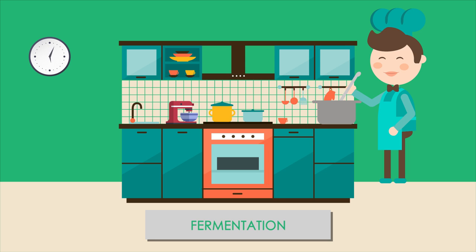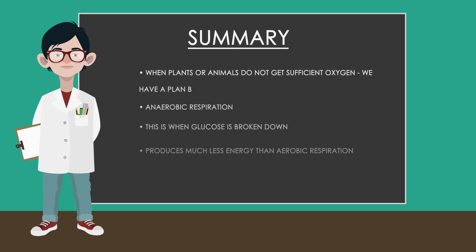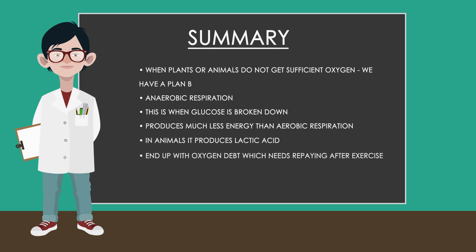In bread making, it is the carbon dioxide that is useful — the bubbles of carbon dioxide help the bread rise by expanding the dough. So you should now know that when our heart and lungs cannot keep up with the oxygen demand, or plants do not have access to sufficient oxygen, we have a plan B: anaerobic respiration. Glucose is broken down directly but produces much less energy than aerobic respiration, which is why it's the second choice. In animals, it produces lactic acid as a by-product, causing muscle cramps and an oxygen debt that needs repaying once exercise has stopped.